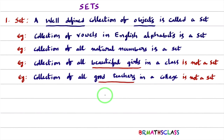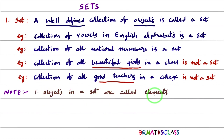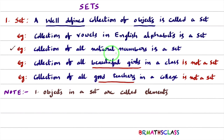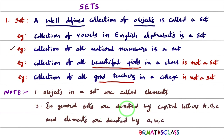I hope you understand the definition of a set. Now an important note: objects in a set are called elements. For example, in the collection of all natural numbers — 1, 2, 3, 4, and so on — each of those is an element of the set. In general, sets are denoted by capital letters A, B, C, and elements are denoted by small letters a, b, c.